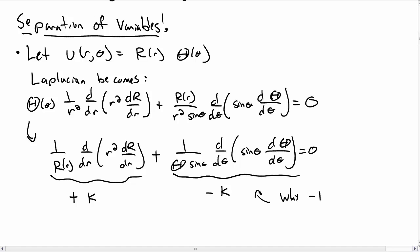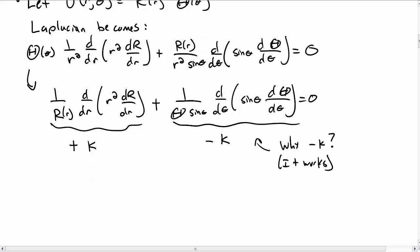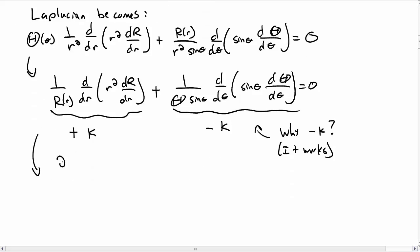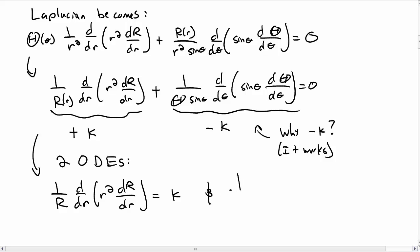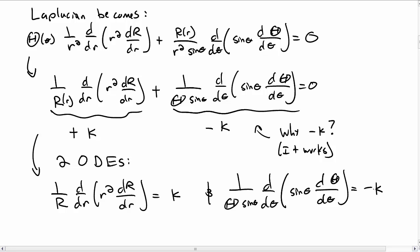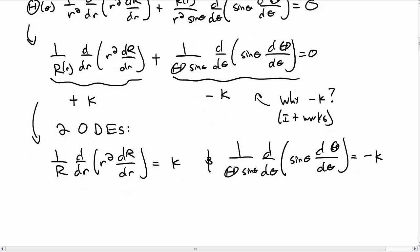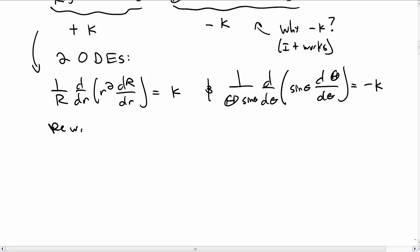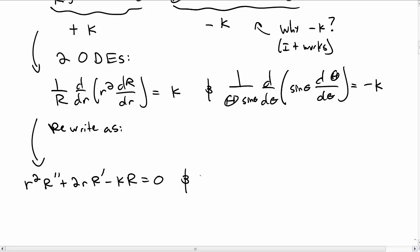I'm going to choose the first term to equal positive k and the second to equal negative k. You could try positive k for both but you won't get anything that makes sense, so I'll just tell you that this choice works. This gives us two ordinary differential equations from the original PDE: one involving only R and r, and the other only involving Θ and θ. Multiplying through and expanding using the product rule, the r equation becomes: r²R″ + 2rR′ − kR = 0.